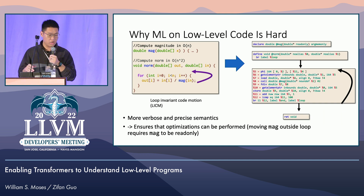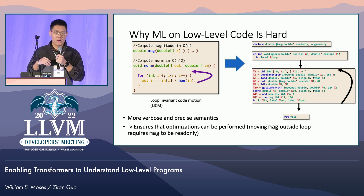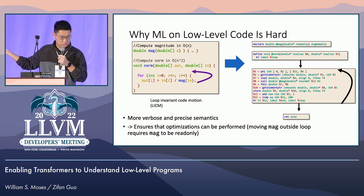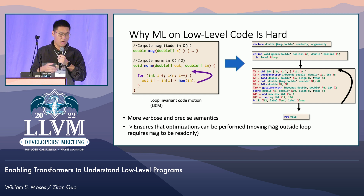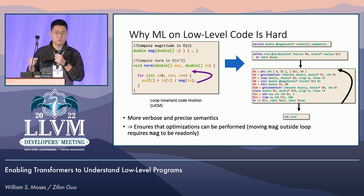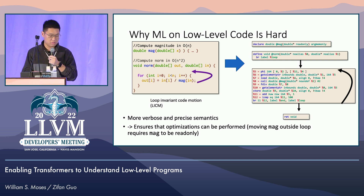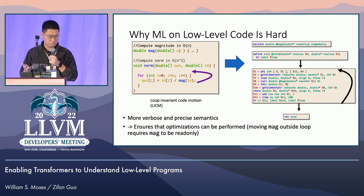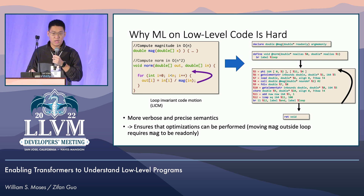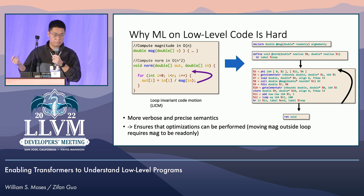Machine learning on low-level code is hard because it's a lot more verbose. You can see that this simple code of loop invariant code motion is turned into this giant thing that has probably double the size of tokens. But the good thing about it is that it has a lot more attributes that specifically tell you whether certain optimizations can be run or not — for example, if the memory is not read-only, then you cannot run loop invariant code motion on it.